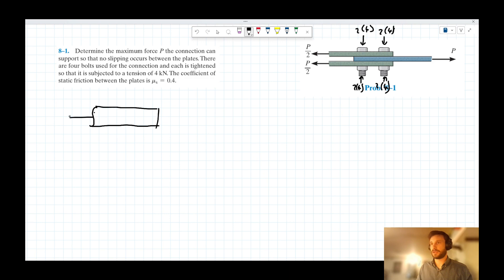We can say we've got this P over two idea acting to the left. We can say we've got four lots of four kilonewton forces acting down. And we can say we've got a normal force coming from the plate beneath it since this is in contact with a plate here, right?